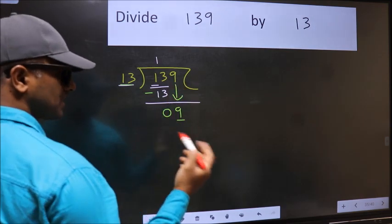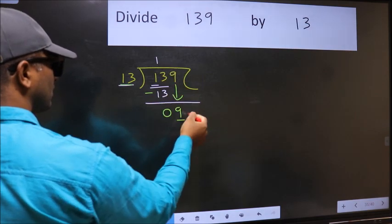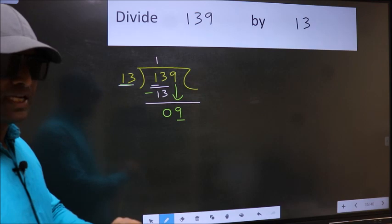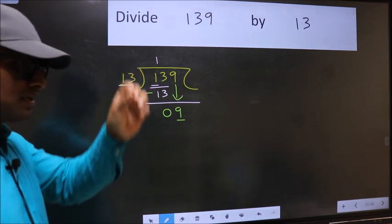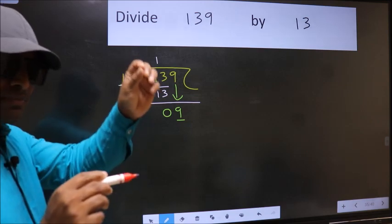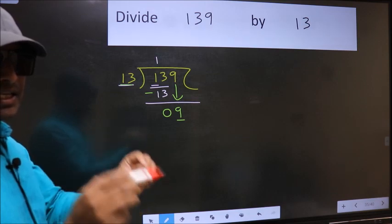And in the same step you want to put dot, take 0, which is wrong. I repeat: bring down the number and also put dot, take 0. Bring down the number and put dot, take 0 both at the same step - you should not do.